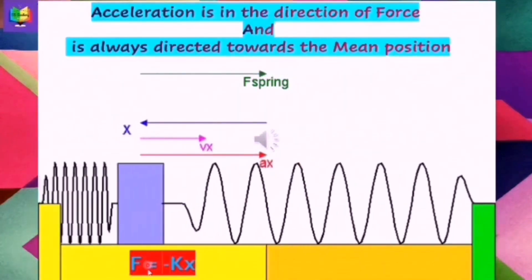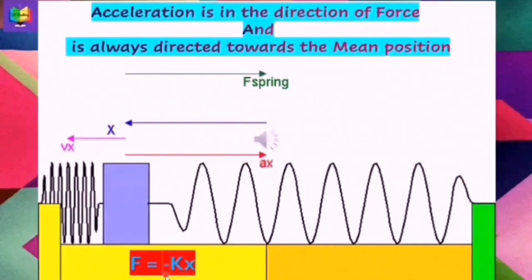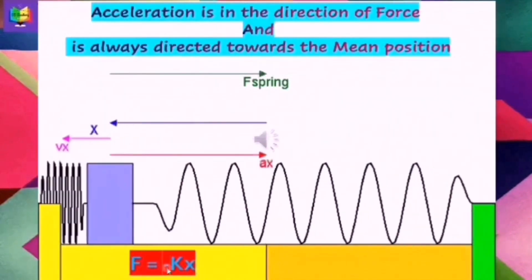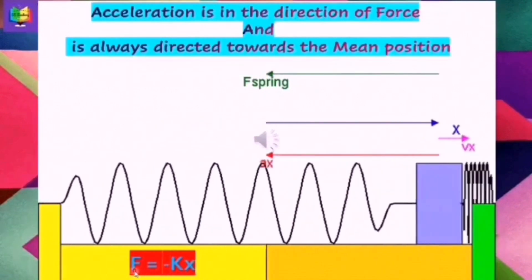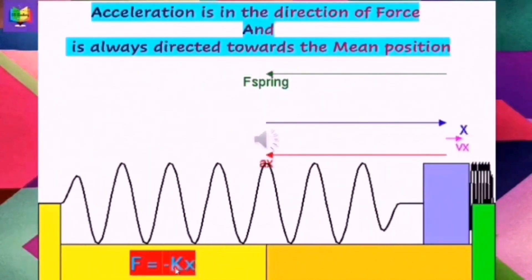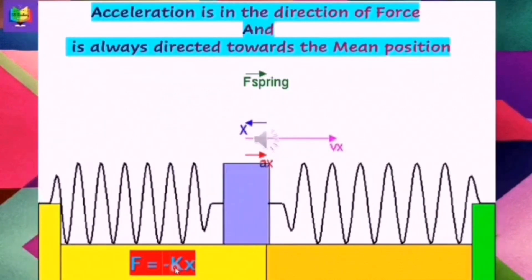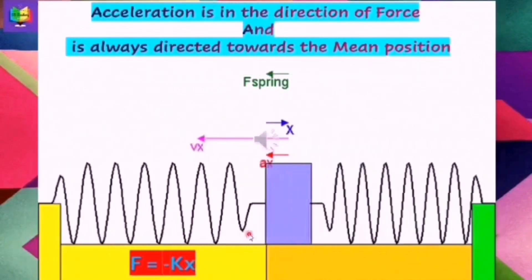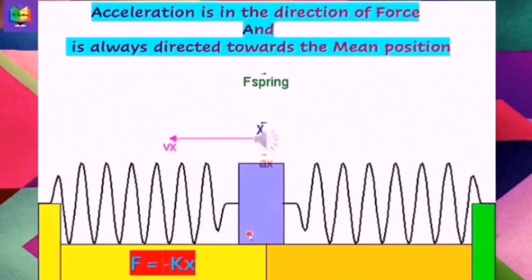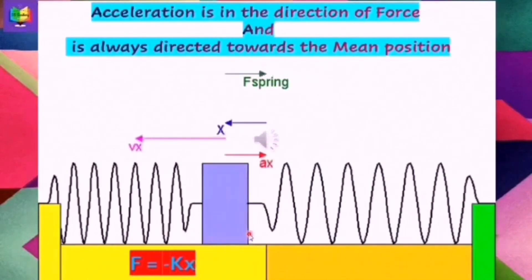In simple harmonic motion, springs obey Hooke's Law: force is proportional to displacement. To change the proportionality sign into an equality, we multiply the right-hand side by a constant k, called Hooke's constant or spring constant. So F is equal to minus kx. The negative sign indicates that the force is in the opposite direction to displacement and is always directed towards the mean position.